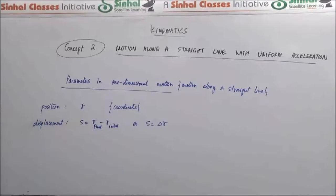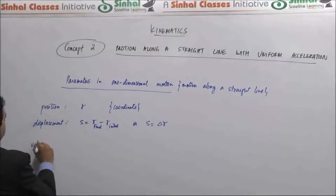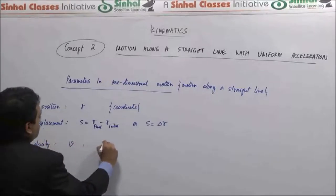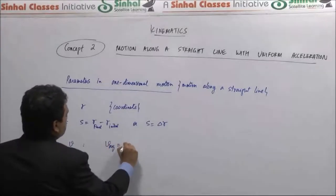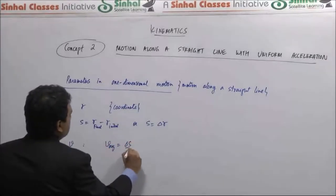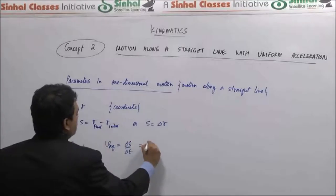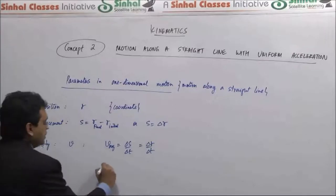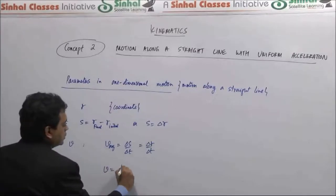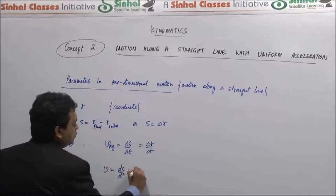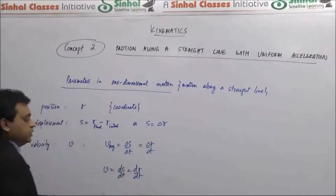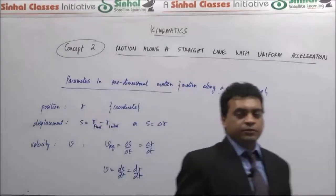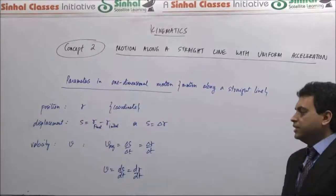The same applies for velocity. Average velocity is change in position upon change in time — displacement upon time. Instantaneous velocity v is ds/dt. These are the two types of velocity. When we use the term velocity in general from now on, we mean instantaneous velocity by default.